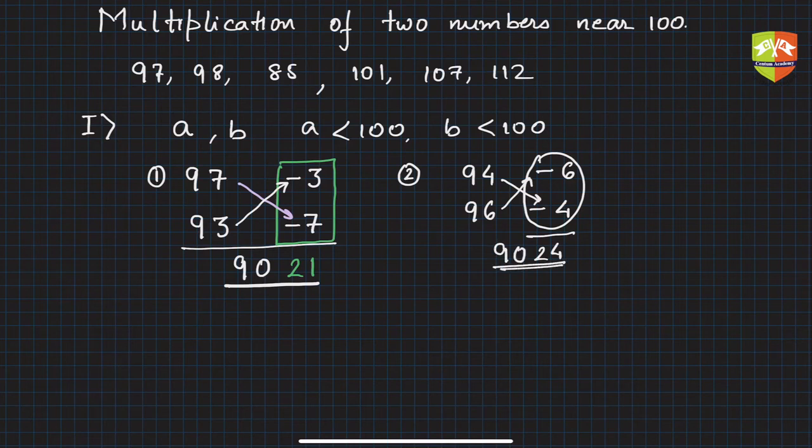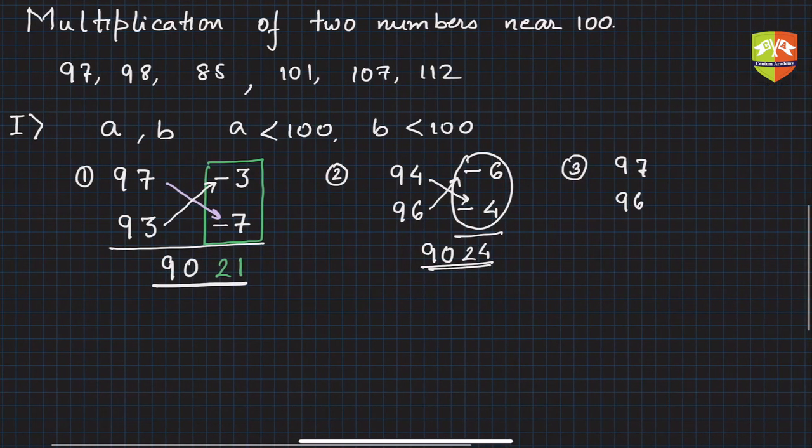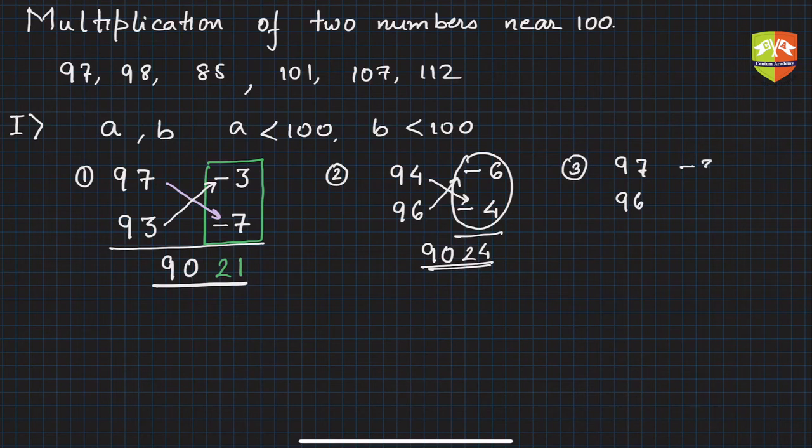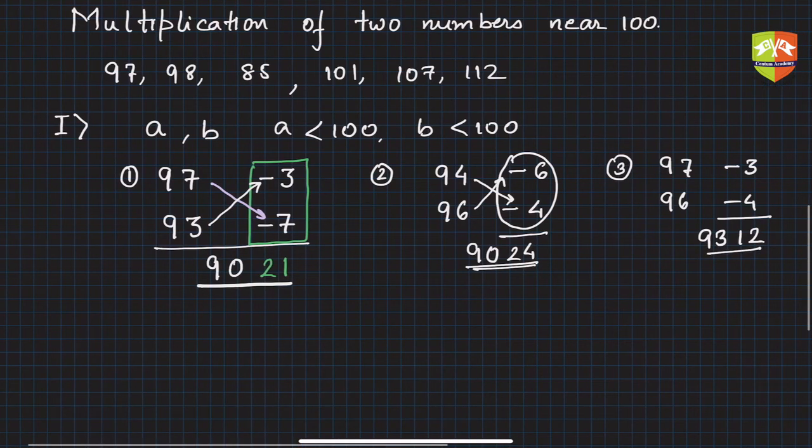You can quickly check. Another example, let's take another one. Let's say 97 and 96. So again, how far is this number? Minus 3 from 100 and this is minus 4 from 100. So if you see, this is minus 3 into minus 4 is 12, and then 97 minus 4, so 93. So how quickly you can do the calculations.